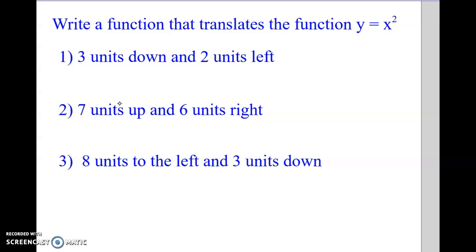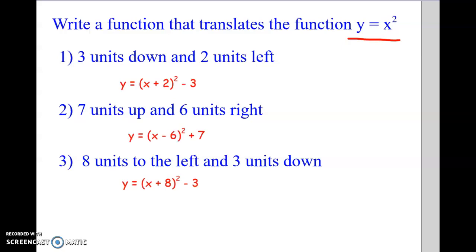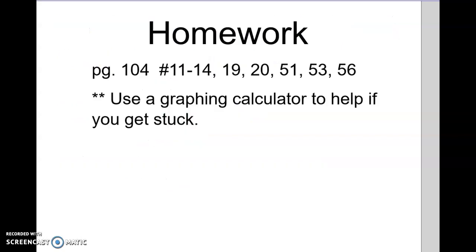Now going in reverse: starting with x squared, write the function for each transformation. The up or down is in the back and it's normal — minus 3 for down, plus 7 for up, minus 3 for down. Left or right is opposite: left means adding, right means subtracting. That's all for this lesson. Try the homework — it's just transforming the parent function. Good luck.